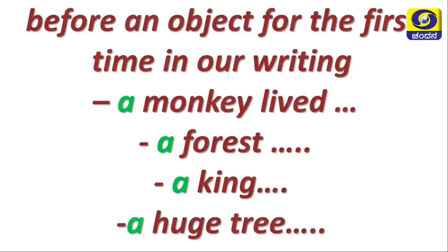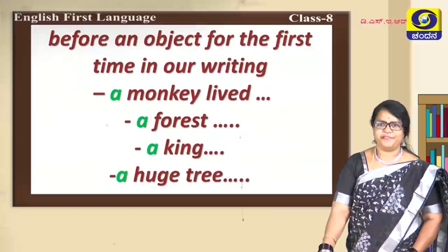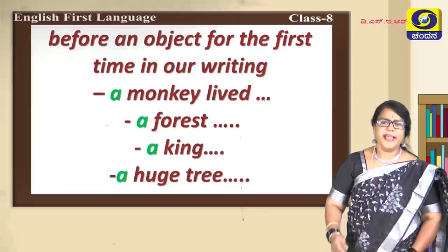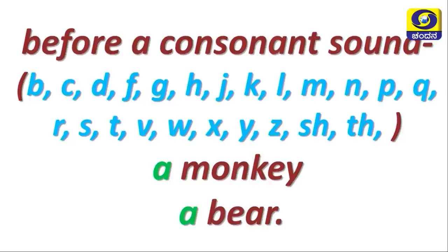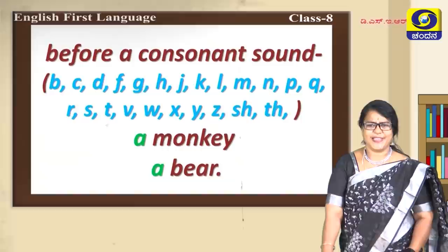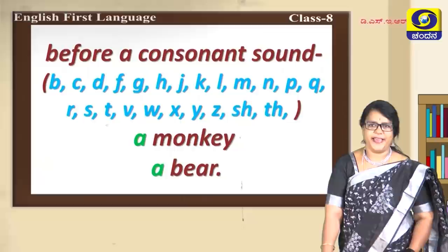'A' is used before an object mentioned for the first time in your writing. In the beginning of stories we use: a monkey lived in a forest, a king, a huge tree. Next, when those things repeat, they change to 'the'. 'A' is used before a consonant sound: b, k, d, f, g, h, j, l, m, n, p, r, s, t, v, w, y, z, sh, th. In our story it was 'a monkey', 'a bear'.